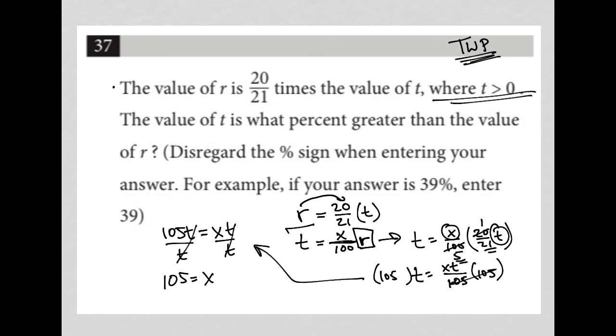And now, don't forget, here's the question that we're trying to find. So T equals 105 over 100 times R. What percent greater is it? Well, 105 over 100 is 5% greater—105 is 5% greater than 100%. So our answer must be 5.